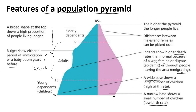If the top is very narrow, it simply means that the death rate is high, showing low life expectancy. Also, the difference between male and female can be picked out, so you can tell that females live longer than males within that particular region.